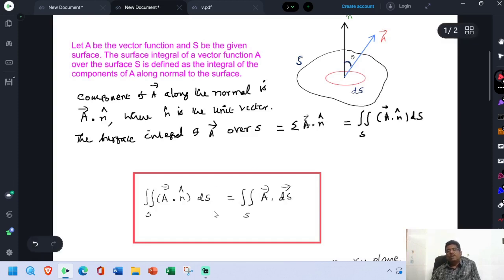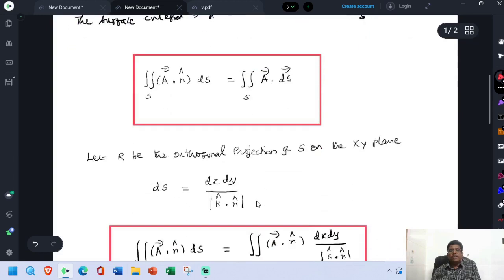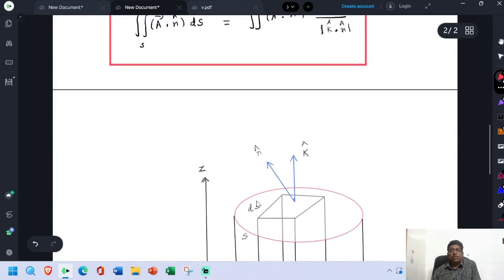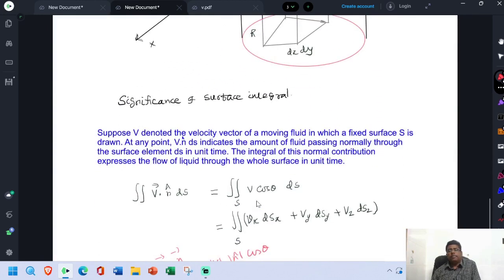To know the physical significance of this surface integral, read out this statement. Suppose V be the velocity vector of a moving liquid in which a fixed surface S is drawn. At any point, V dot n cap into Ds indicates the amount of fluid passing normally through the surface element Ds in unit time.